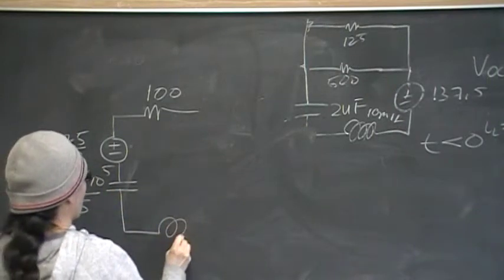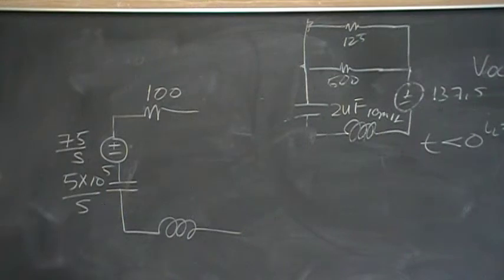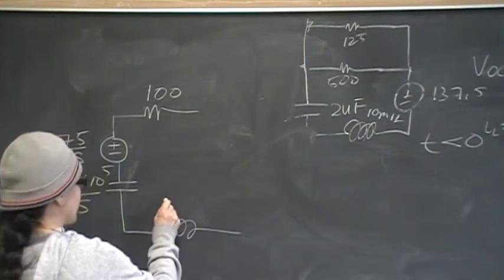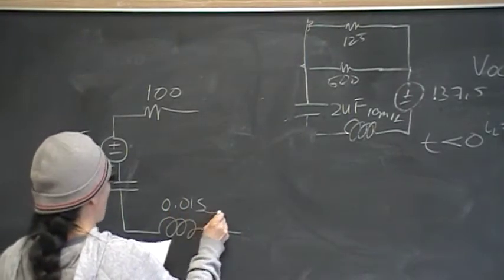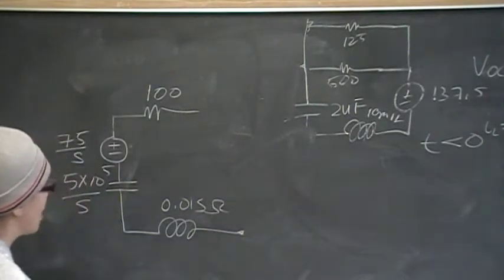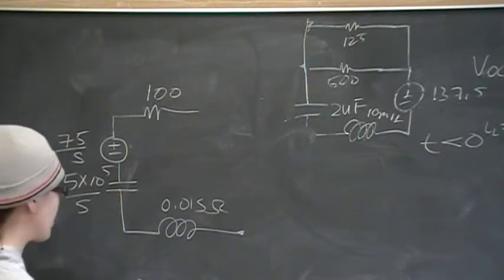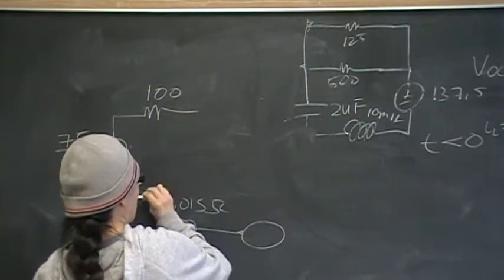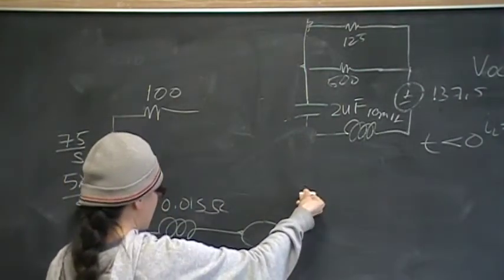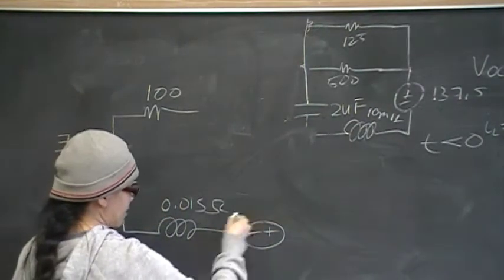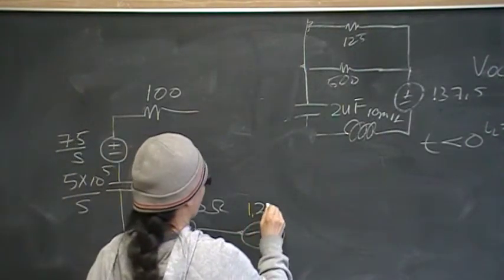And the inductor translates into the S-domain as the impedance of the inductor plus the initial voltage term. The impedance is Ls, which gives 0.01s ohms. The initial voltage stored is the initial current times L, or Li₀. We found the current flows in that direction and it was negative, meaning the current really flows the other way and the polarity of the voltage is like such — so that's going to be 1.25 millivolts.